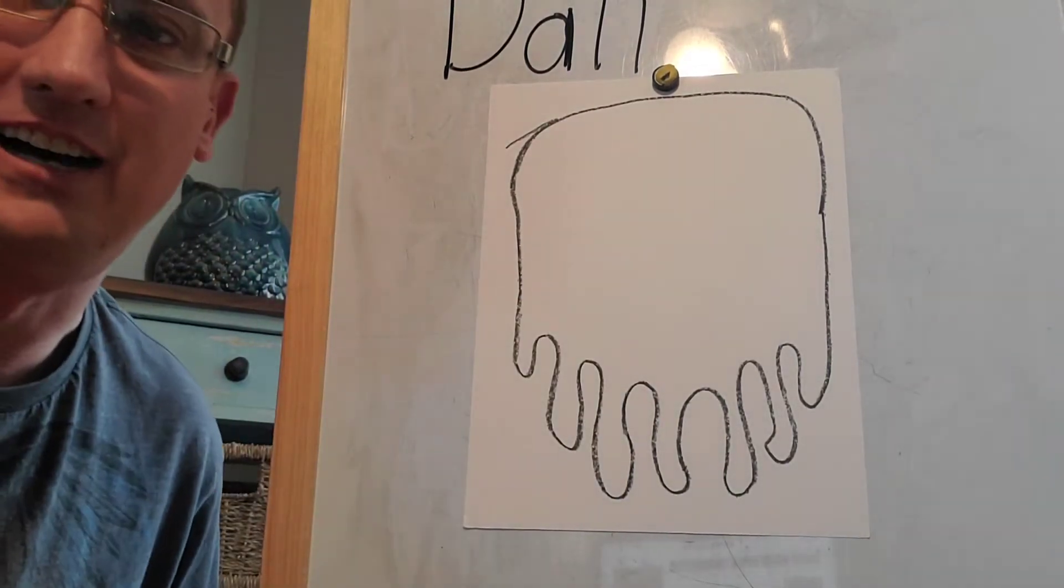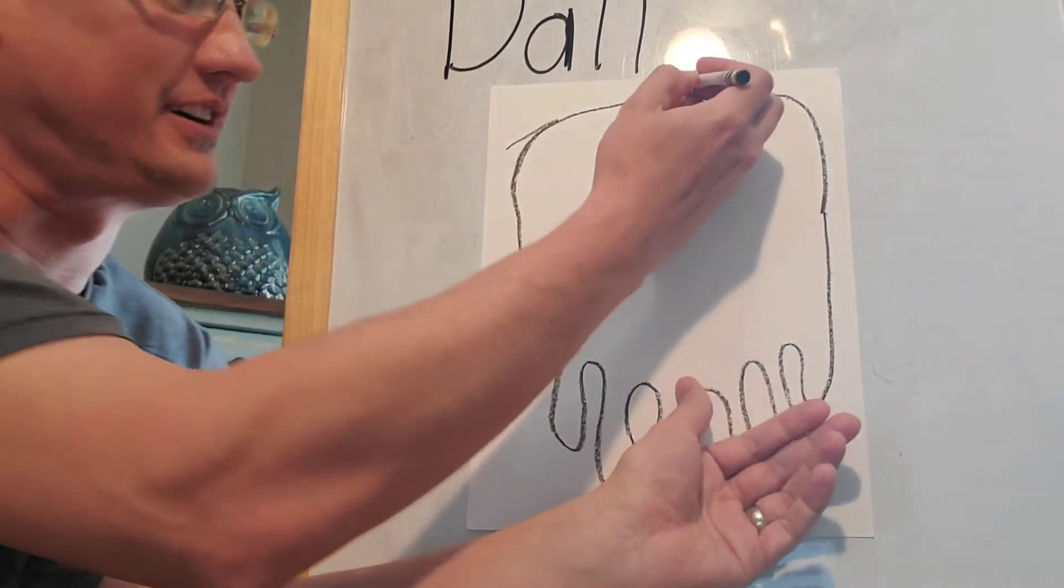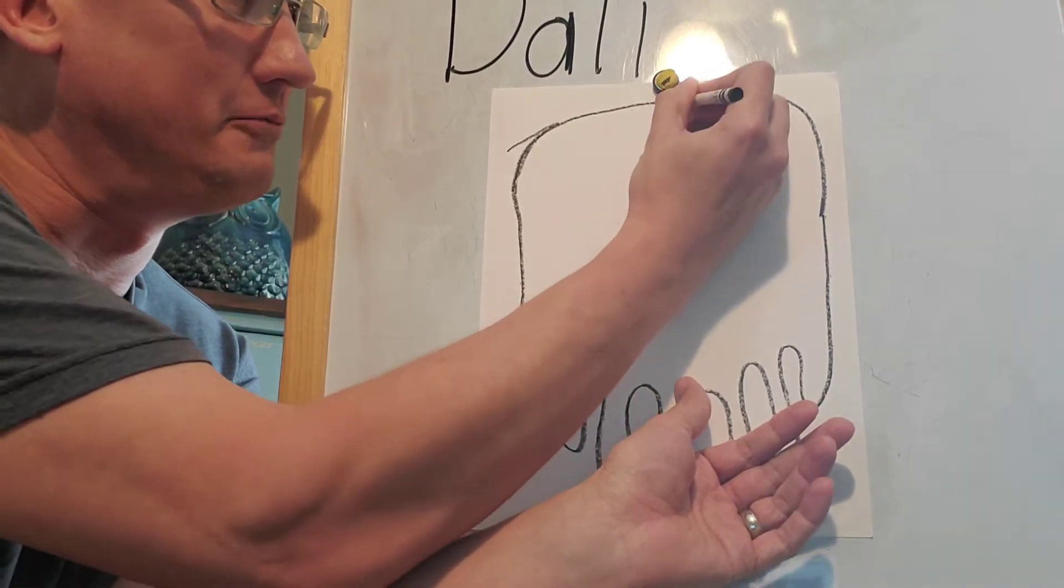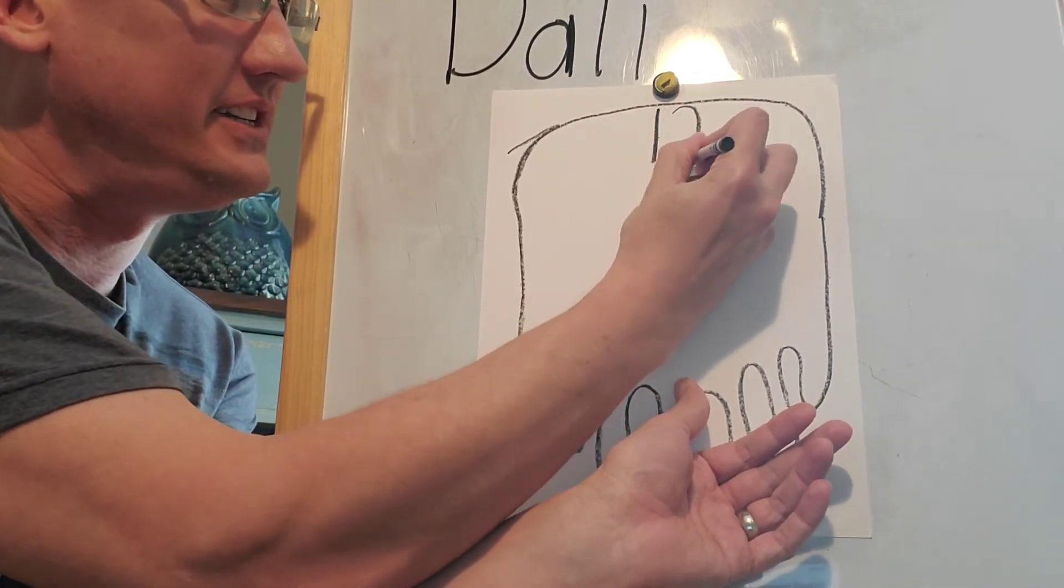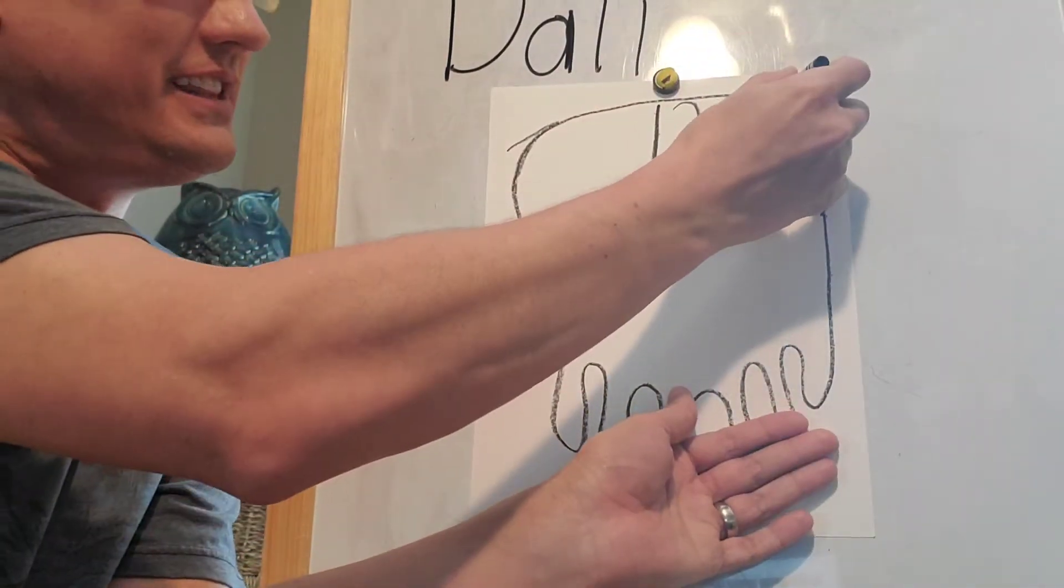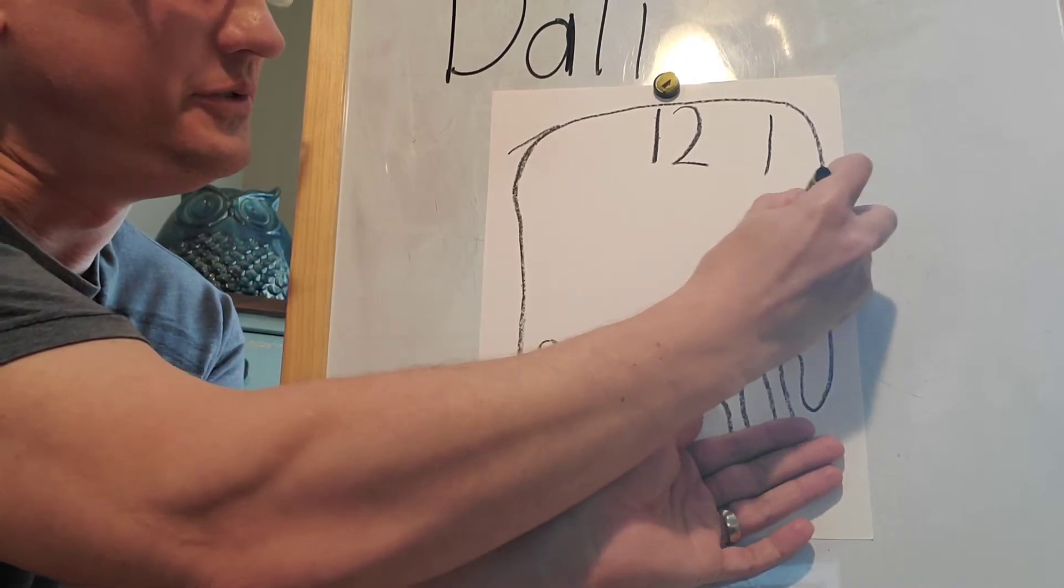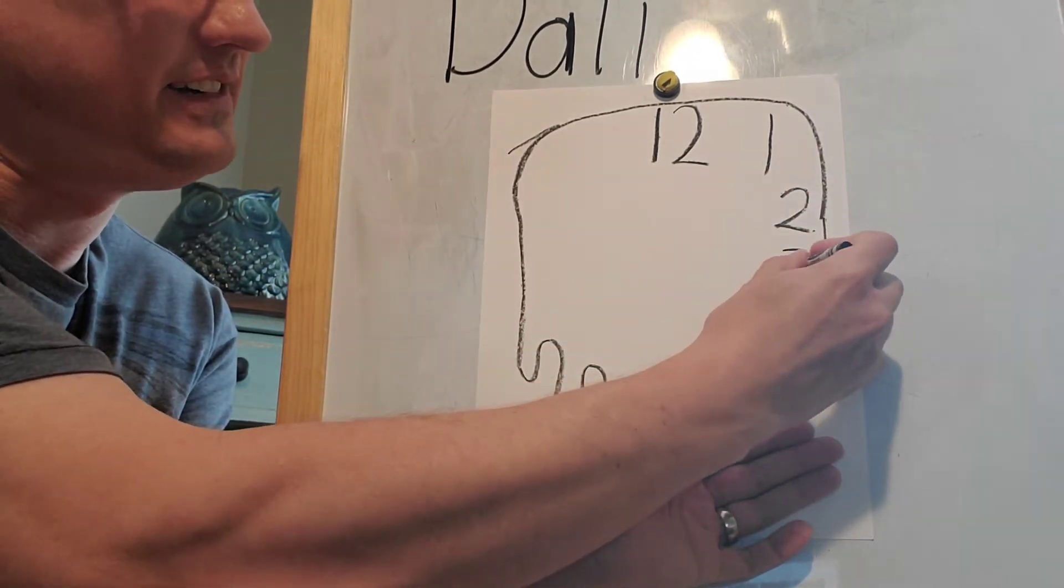That's going to be the outside of our clock. Now, let's work on the numbers of our clock. On the very, very top of a clock, boys and girls, you have the number 12. So, I'm going to write a big 1 and a 2. And then, over here on a clock, let's write the number 1. And then, let's write a 2. And then, we're going to write a 3.